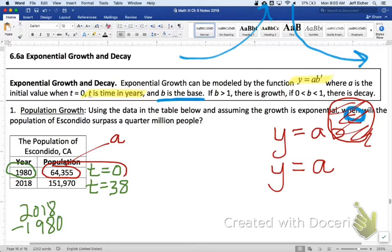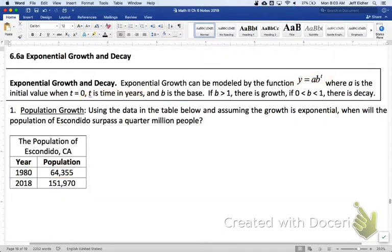So, let's check out this first question. It says, using the data in the table below and assuming the growth is exponential, when will the population of Escondido surpass a quarter million people? Before we can answer the question, we need to write our function.